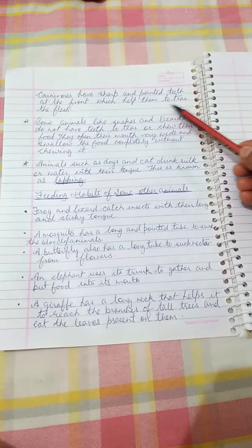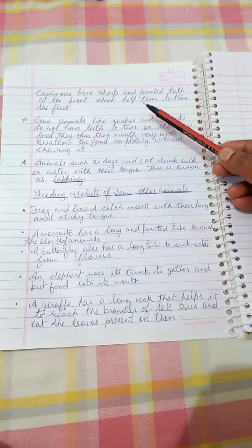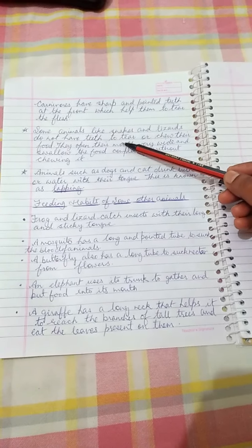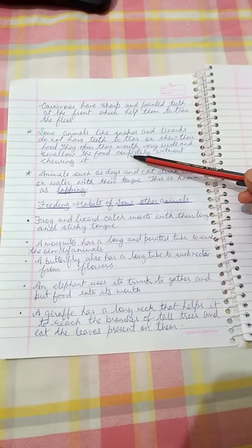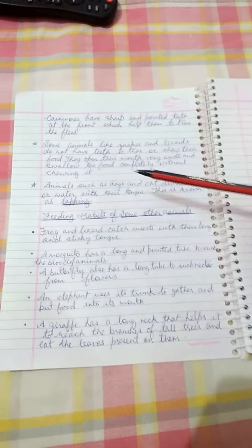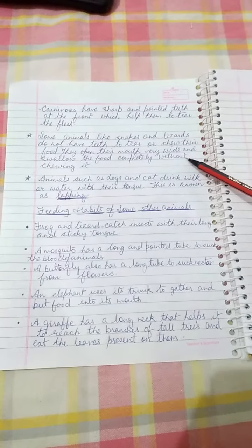Carnivorous animals basically have sharp and pointed teeth at front which help them to tear the flesh. Some animals like snakes and lizards do not have teeth to tear or chew their food. They open their mouth very wide and swallow the food completely without chewing it.